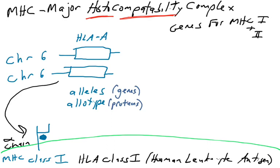How many alleles are there for the HLA-A gene? It turns out there are over 1,900 versions of this gene in the human population that have been identified to date. That's a lot of versions. You only inherit two — maternal and paternal — but there are over 1,900 possible alleles in the human population. We'll get to why there are so many different versions shortly.